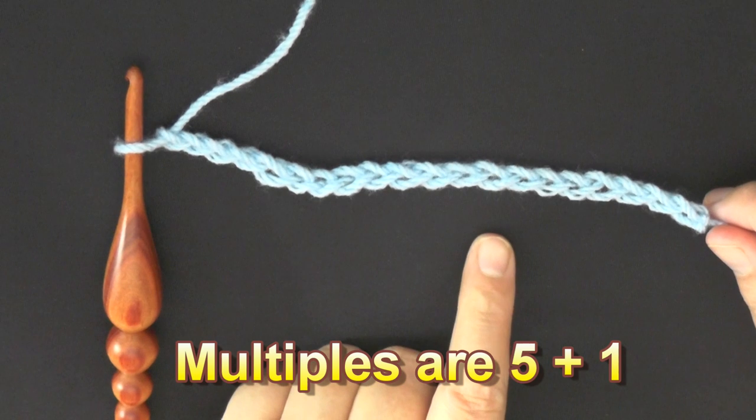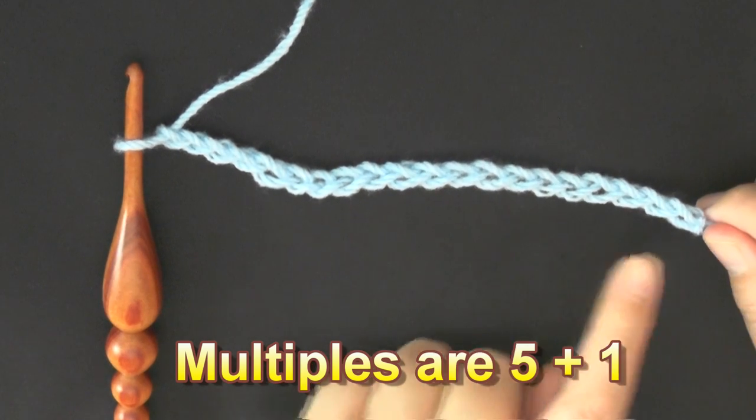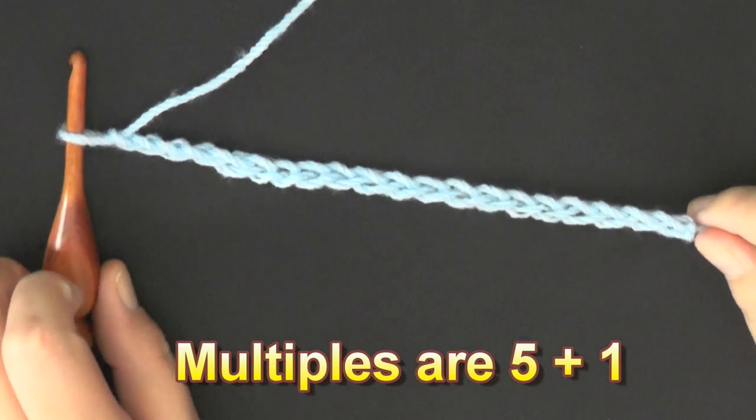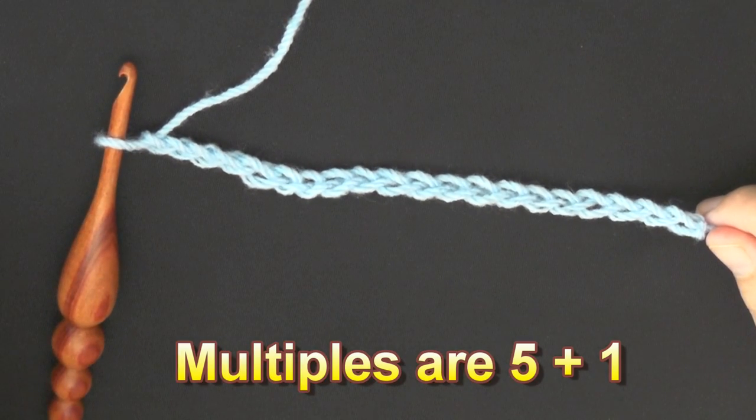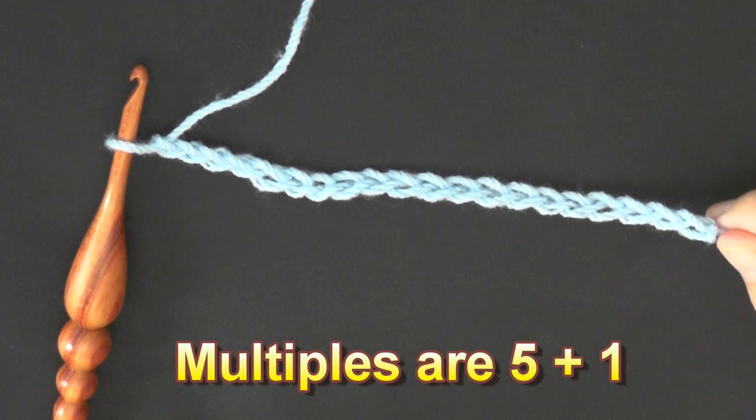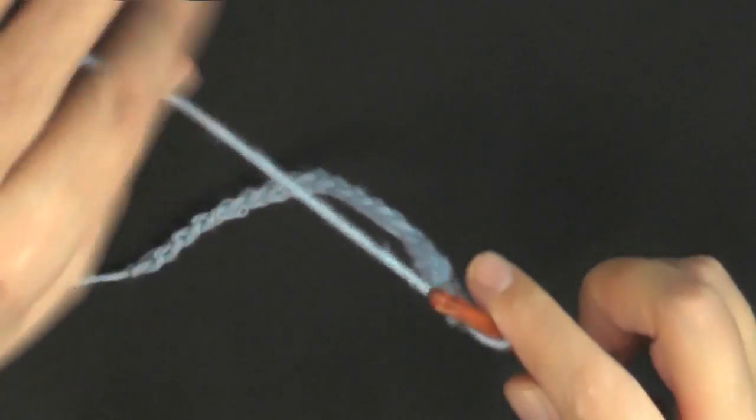The multiples of the stitch is 5 plus 1. So what you want to do is chain in multiples of 5 until you get the width that you want, and then chain one more and you're ready to start.